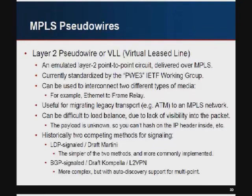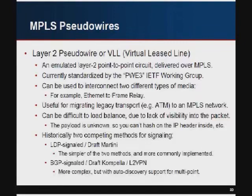There are two competing signaling methods for pseudowires. The simpler and most commonly used is LDP-based signaling called Draft Martini, written by Luca Martini who worked at Level 3 and is now at Cisco. The other is BGP-signaled, called Draft Compella by Kireeti Compella at Juniper — so there's a vendor war here. It's typically called L2 VPN versus L2 circuit for the LDP version. The BGP-based method is more complex since you have to transport it across your IBGP infrastructure, enable all the families, and handle it as a route. But it supports auto-discovery, making multipoint a bit easier.